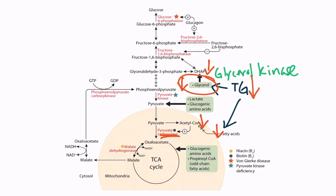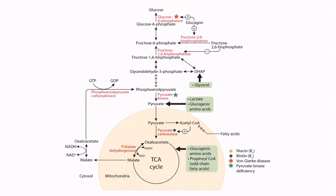Let's continue discussing the pathway. The next step in gluconeogenesis is when oxaloacetate is converted into malate. Notice how oxaloacetate must be converted into malate, shuttled across the mitochondrial membrane into the cytosol, and then converted back into oxaloacetate again. This is because oxaloacetate cannot cross the mitochondrial membrane. This is called the malate shuttle, and this is the same mechanism whereby NADH is transferred from the cytosol into the mitochondria during glycolysis.